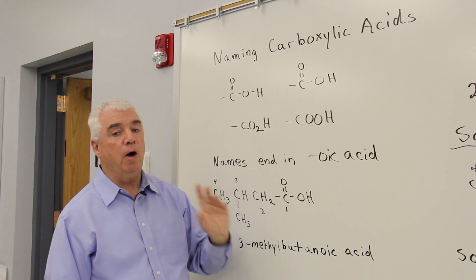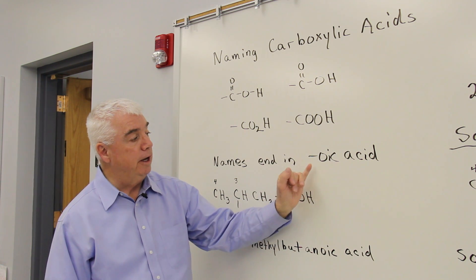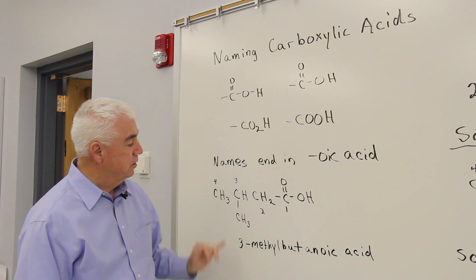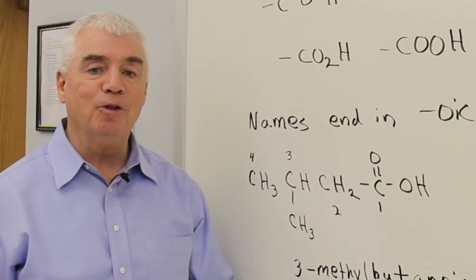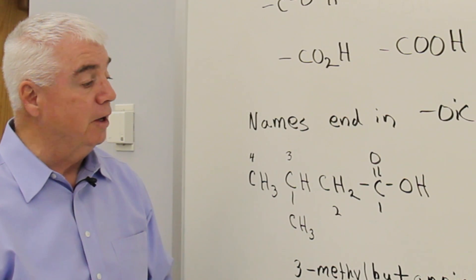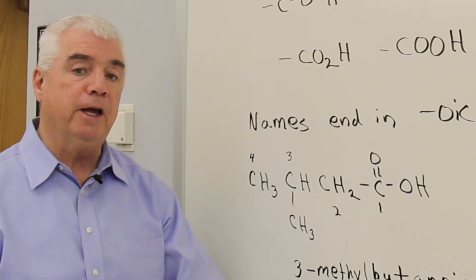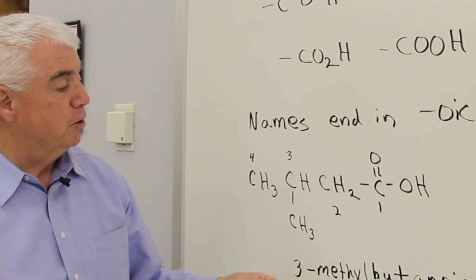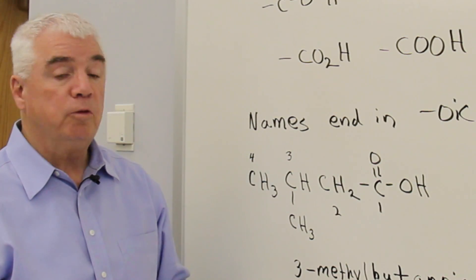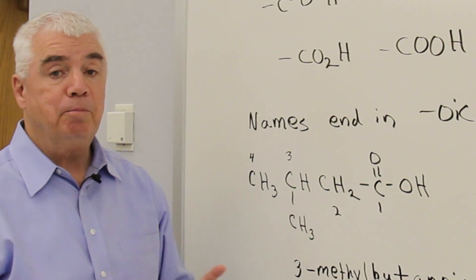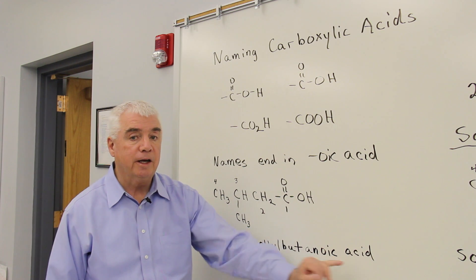Carboxylic acids drop the E of the longest chain, the base word, and add oic acid. So here in this example, we'd still follow all the rules for nomenclature. We'd want to find the longest chain that includes the functional group. It'll become our base word and so forth. I see a chain of four, so the base word would be derived from butane. Drop the E, add oic acid, we get butanoic acid.